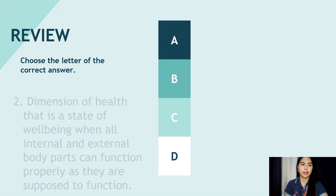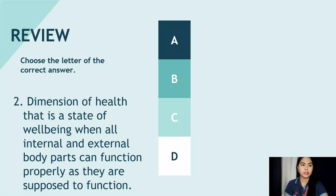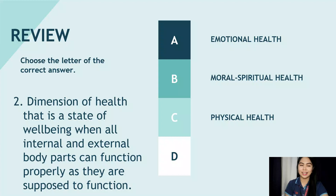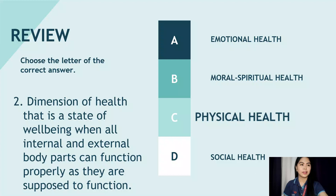Number two: Dimension of health that is a state of well-being when all internal and external body parts can function properly as they are supposed to function. A. Emotional health, B. Moral-spiritual health, C. Physical health, and D. Social health. The correct answer is Physical health.